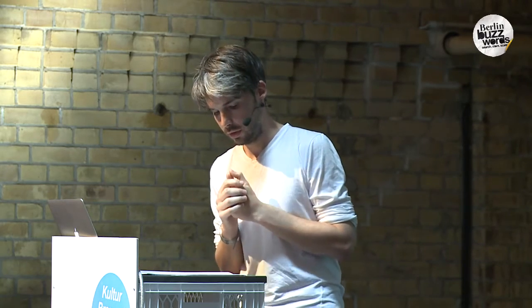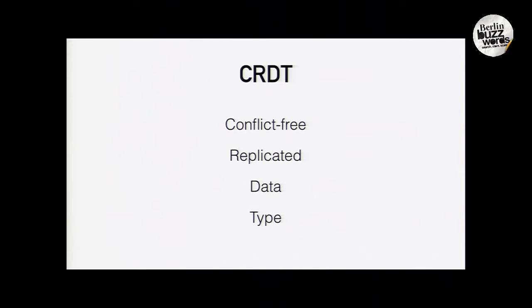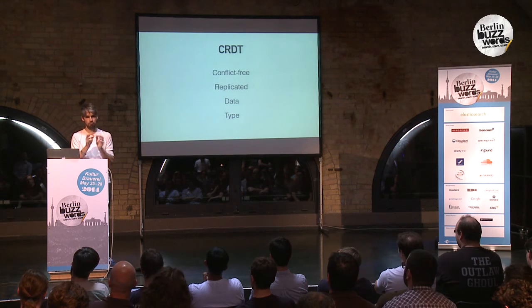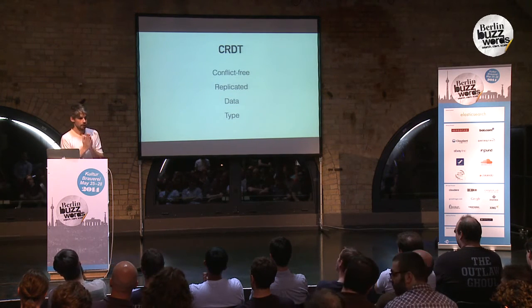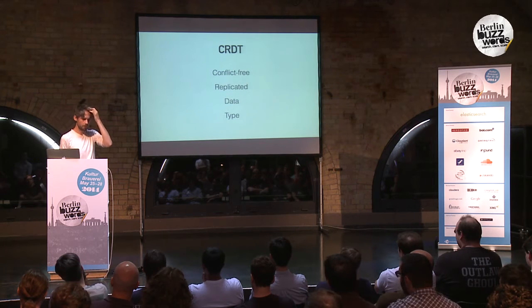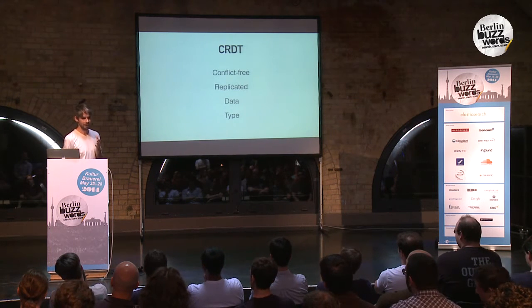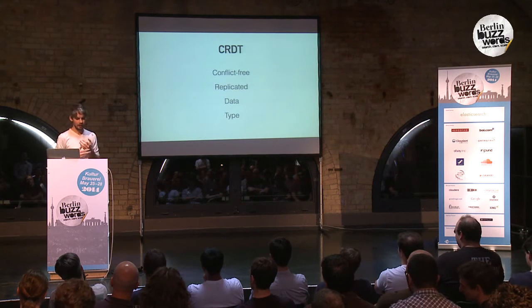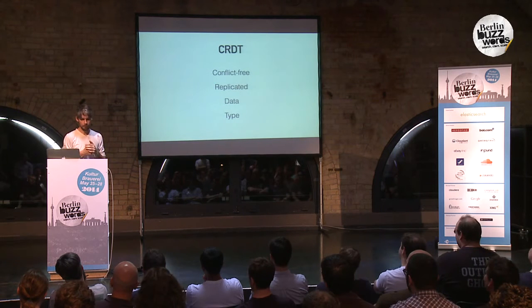That brings us to the name of the talk: CRDTs — Conflict-free Replicated Data Types. A CRDT is a distributed data type, like a simple variable or a set, which is provably eventually consistent without consensus. CRDTs achieve eventual consistency by using ACID 2.0 or CALM-compliant operations. The seminal paper on CRDTs is by Marc Shapiro, formerly of Microsoft — it's super academic and difficult to wrap your head around, so the best way to understand what a CRDT is, is by example.